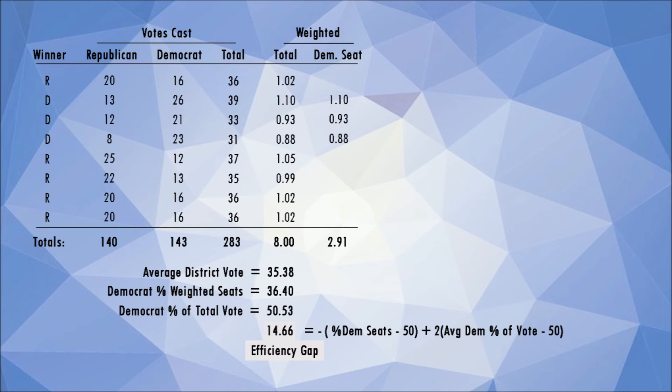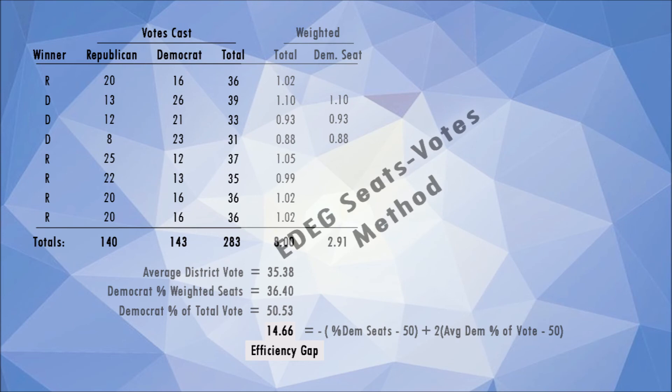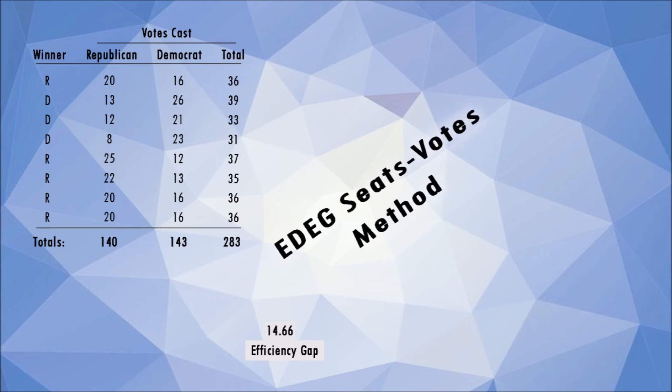This does not make sense. Also, it turns out that by adding up each district's vote total to get a statewide total, the higher turnout districts again skew the final results. When districts are relatively even in voter turnout, the error will not be all that great, but as variations in voter turnout increase, the error increases. As a bonus, by correcting this error, we come up with the easiest method to compute the efficiency gap: the Equal Districts Efficiency Gap Seats-Votes method.